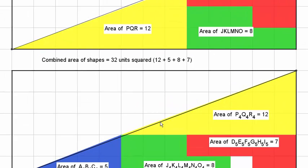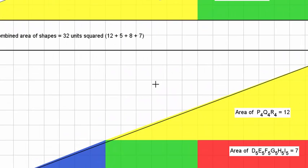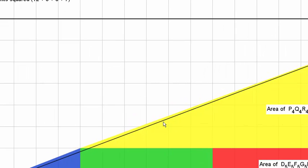We actually don't get a gap this time. But we can see that there is additional area beyond half the rectangle, and that additional area is also 0.5 units squared.